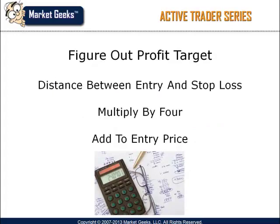Once I enter the market and place my stop loss, I need to figure out where to take profit. Take the distance between the entry price and the stop loss and multiply it by 4, then add that to your entry price. Since the difference between the high and low in this case is about 65 cents, I add a few ticks for the entry and a few ticks for the stop loss and come up with 70 cents. I then multiply this number by 4 and come up with $2.80. Since I entered at $27, my exit target would be right around $29.80.